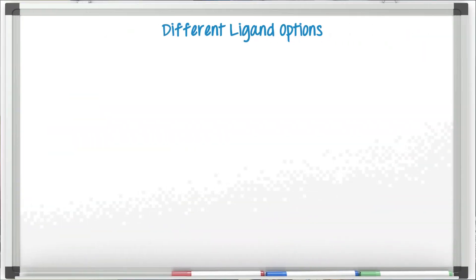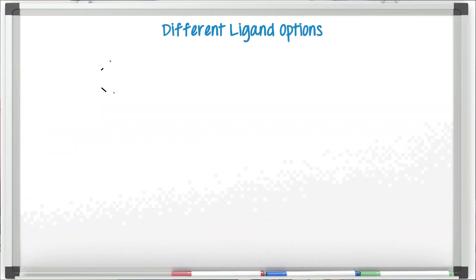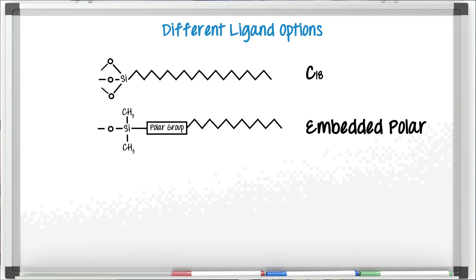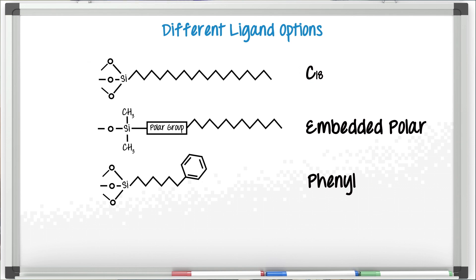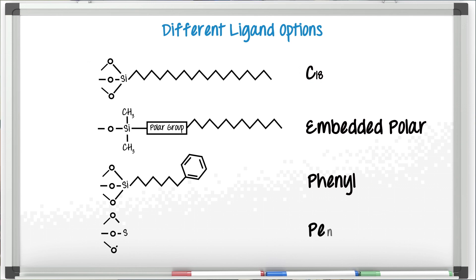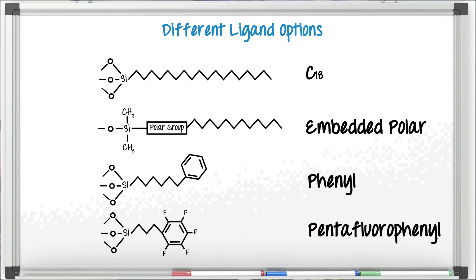Let's take a look at these four bonded phase ligands. We'll start with C18, a general purpose ligand that can be used on a wide range of analytes. Next is the embedded polar group, which offers some hydrophilicity along with the hydrophobicity of that alkyl chain length. Then the phenyl group — due to its pi bond interaction — offers unique selectivity, especially for aromatic compounds. And lastly, the pentafluorophenyl group, with fluorine groups on the outside of the ring and their high electronegativity, offers unique selectivity especially when compared to typical C18 bonded phases.